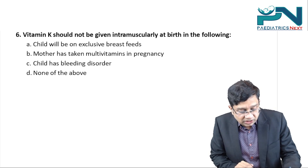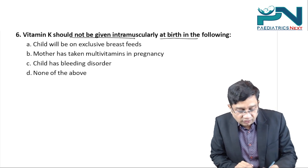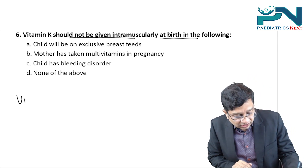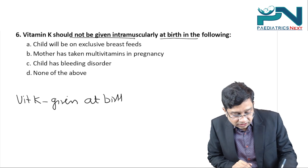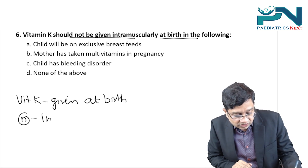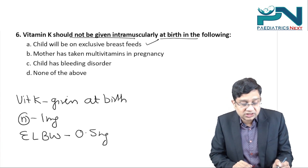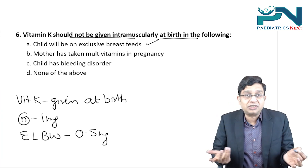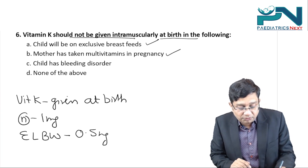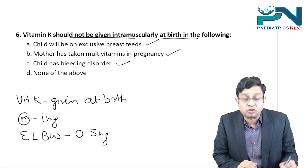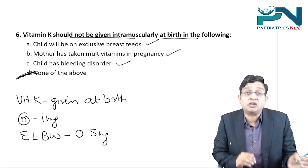Question six: Vitamin K should not be given intramuscularly at birth in which of the following? Vitamin K should always be given at birth — 1 mg in a normal child, 0.5 mg in an extremely low birth weight child. Whether the child is exclusively breastfed, the mother has taken multivitamins, or the child has a bleeding disorder — in all these conditions, Vitamin K should still be given. The answer is none of the above.